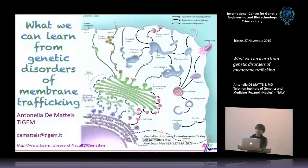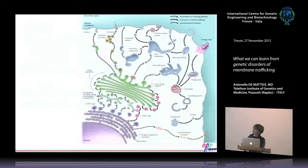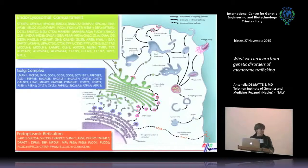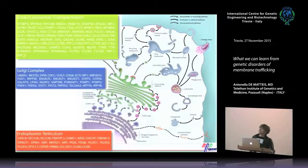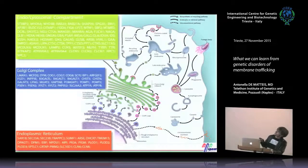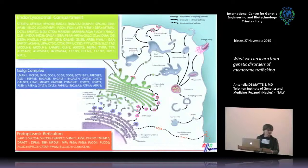During these years we have used many different approaches, and one that we have been using in the last decade has been to study membrane trafficking by studying those Mendelian disorders that are caused by mutations in genes that encode some membrane trafficking components. These are altogether roughly 150 genes that are mutated in genetic disorders and encode for components of membrane trafficking in the endolysosomal pathway, the Golgi complex, or the endoplasmic reticulum.